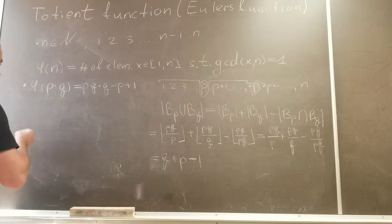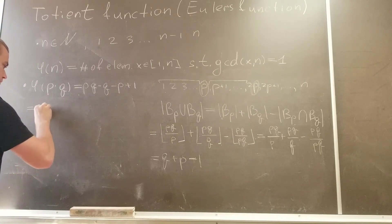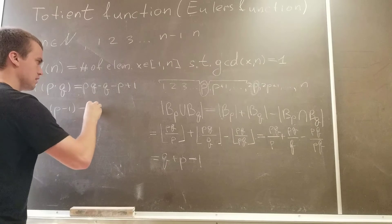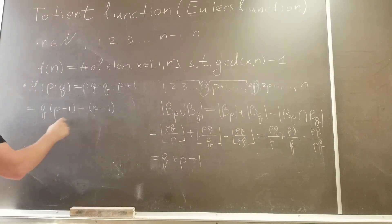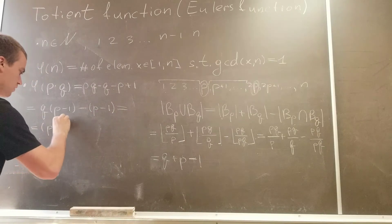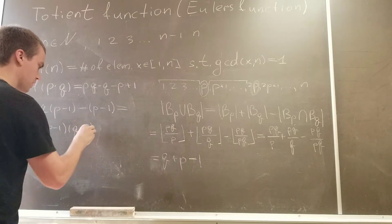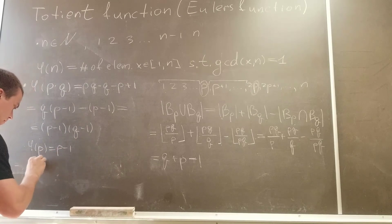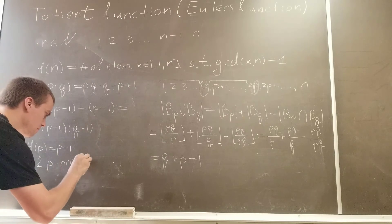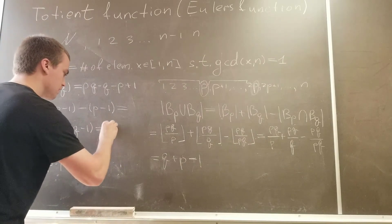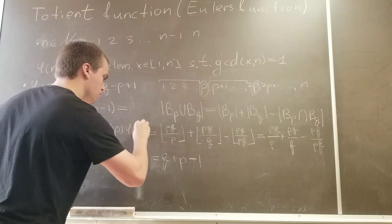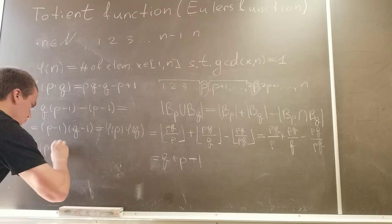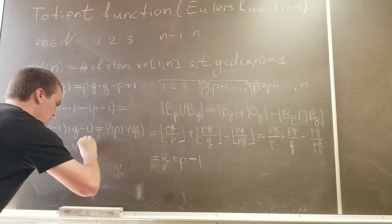This answer is acceptable, but let's factor it. Factoring q gives q(p − 1), and factoring the minus sign gives −(p − 1), so we can factor out (p − 1) to get (p − 1)(q − 1). We know that φ(p) = p − 1 when p is prime, so we can write this as φ(p) times φ(q).